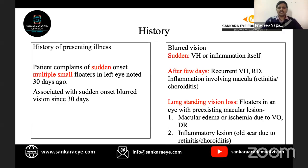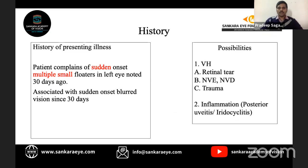If the patient had longstanding blurred vision with recent onset floaters, we consider pre-existing macular pathology such as macular edema, macular ischemia due to vein occlusion, diabetic retinopathy, or reactivation of inflammatory sequelae. In this case, the patient had simultaneous sudden onset multiple small floaters and blurred vision 30 days back. So we should consider vitreous hemorrhage or inflammation as differential diagnoses — specifically PDR, vein occlusion with neovascularization, retinal tear, or posterior uveitis.